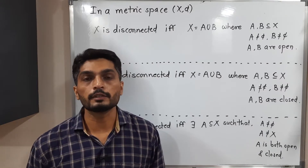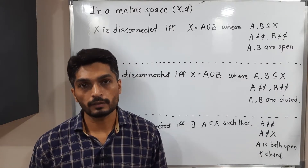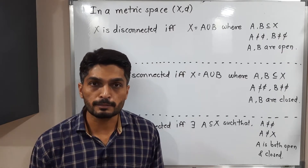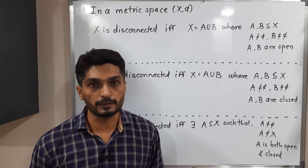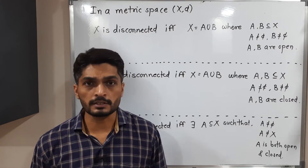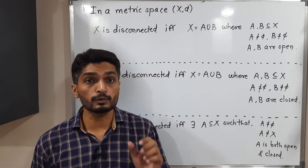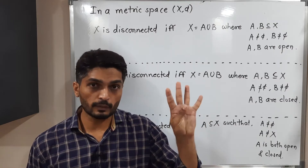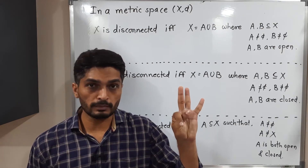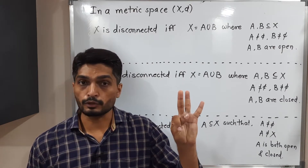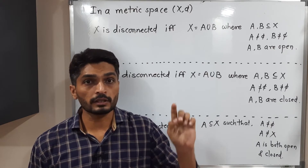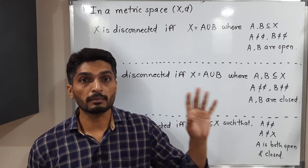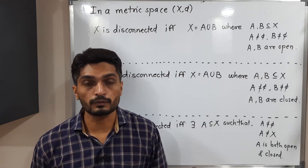Let us discuss equivalent definitions of disconnected metric space. We have already seen the original definition in the previous video: a metric space is disconnected if it is possible to find two subsets A and B of X satisfying four conditions — X equals A union B, A and B are non-empty, A-bar intersection B equals phi, and A intersection B-bar equals phi.